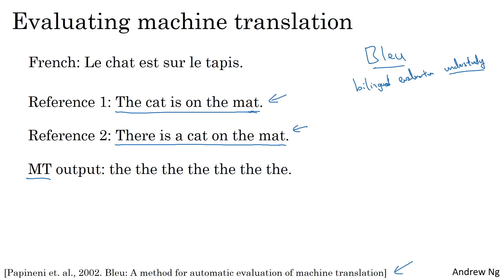This is clearly a pretty terrible translation. One way to measure how good the machine translation output is, is to look at each word in the output and see if it appears in the references. This could be called the precision of the MT output. In this case, there are seven words in the output, and every one of these seven words appears in either reference one or reference two. So this would have a precision of seven over seven — it looks like great precision.